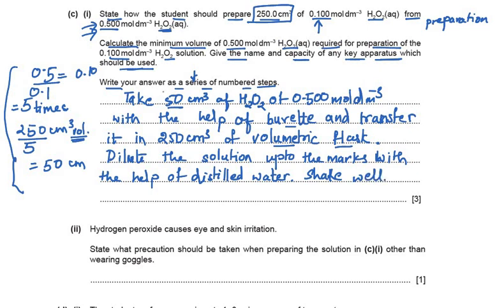To summarise the preparation steps: first find the dilution factor (here 5 times). Then find the volume for the volumetric flask (250 cm³). Divide 250 by 5 to get 50 cm³ as the minimum volume. These are the steps required for this 3-mark question.